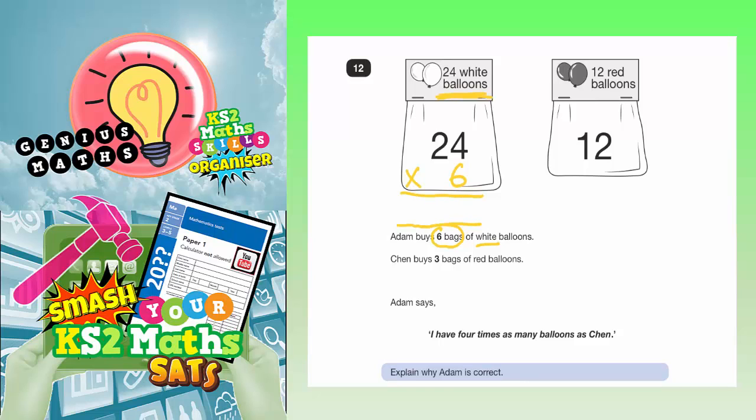Six bags of 24 white balloons. Six lots of four is 24. Put the four in, carry the two. Six twos are 12, plus the two is 14. So he's going to end up with 144 white balloons.